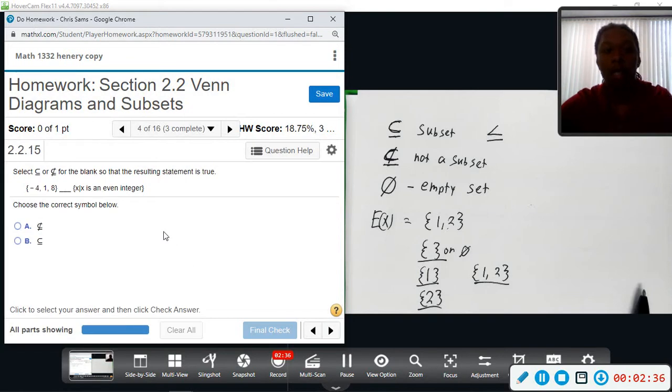And then number four, a similar question. We want to fill in the blank with subset or not. And we have the set negative four, one, and eight. And then we have a description.